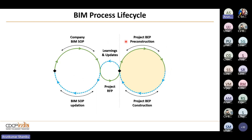Overall, the cycle looks like this: a company creates a standard operating procedure; it comes into the project as an EIR and becomes a pre-construction BEP — the proposed approach. During project it becomes the construction BEP — the actual method by which the model was prepared and used. At the end of construction, learnings travel back to the originator who updates their standards and the cycle repeats.